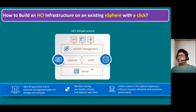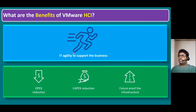VMware is one of the leading providers of HCI solutions. The main key benefits include IT agility to support the business and OPEX reduction — operational expenditure is reduced. Whatever storage administrators previously handled, like storage zoning and LUN masking, is completely reduced with this HCI solution. There is also CAPEX reduction — capital expenditure reduction. Previously, procuring a storage box, fiber channel switches, and fiber cables required so much infrastructure. When you plan to move from a traditional storage solution to HCI, capital expenditure is significantly reduced.